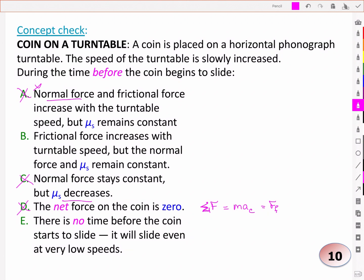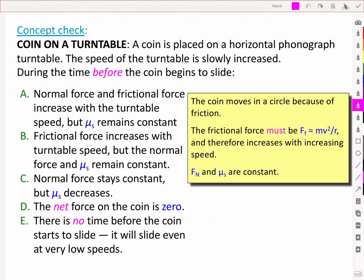Well, unlikely. There's probably enough friction there that it'll at least keep it in place for lower speeds. And so we're left with the frictional force increases with turntable speed, but the normal force and mu s remain constant. So remember, the coin moves in a circle here because of friction. It's the friction that holds it in place and keeps it from sliding off. And so the friction, which is an adapting force, will keep building and building and building until just before it reaches its maximum. And after its maximum, it'll drop to kinetic friction. And so that force will keep increasing and it's what will hold it in place.